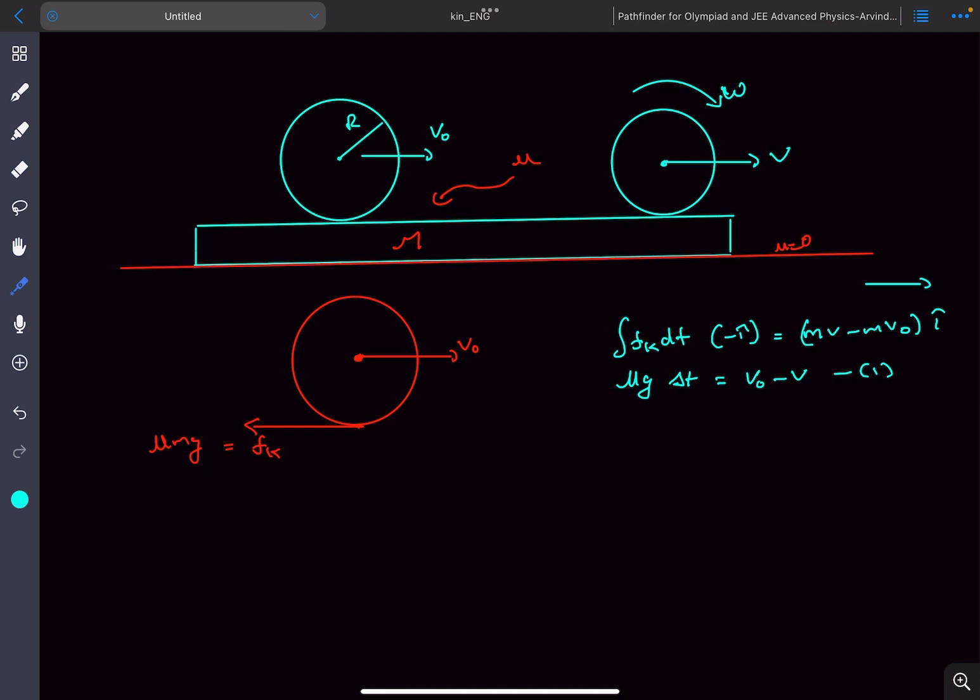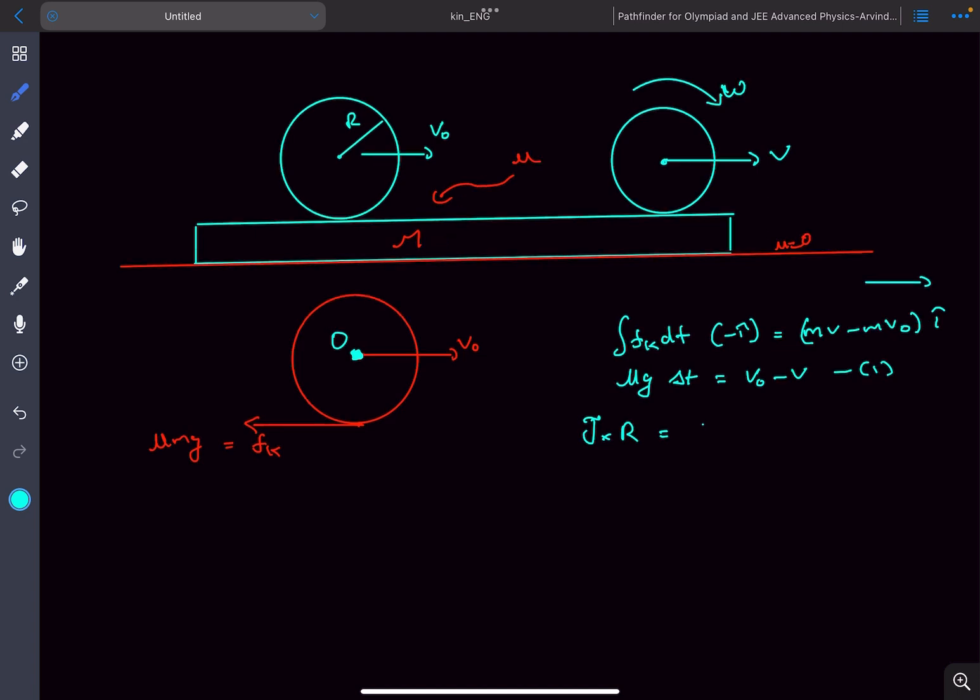Now this friction also provides torque. About the center, this friction gives the sphere torque due to which its angular momentum starts increasing. We can write the angular impulse, which is the impulse due to friction multiplied by the radius. This equals the change in angular momentum of the sphere about O, which is I omega. For a sphere, I equals 2/5 m r squared times omega.